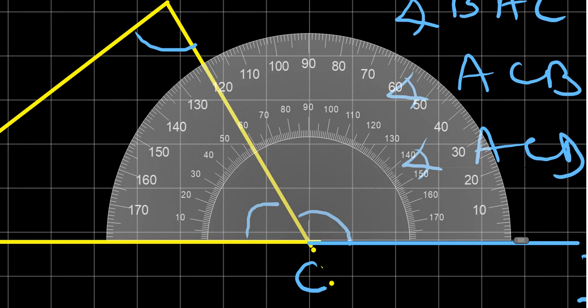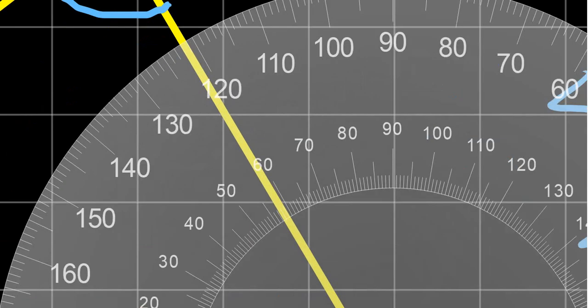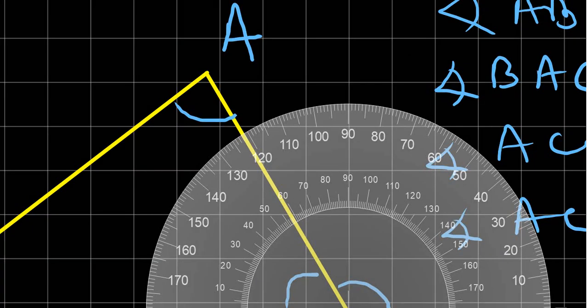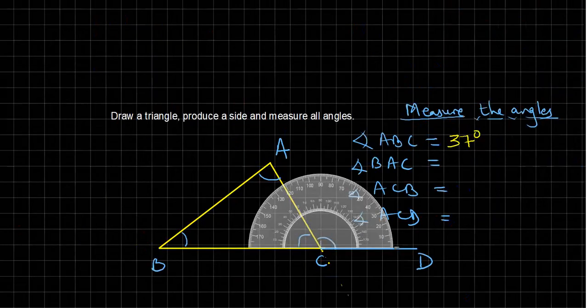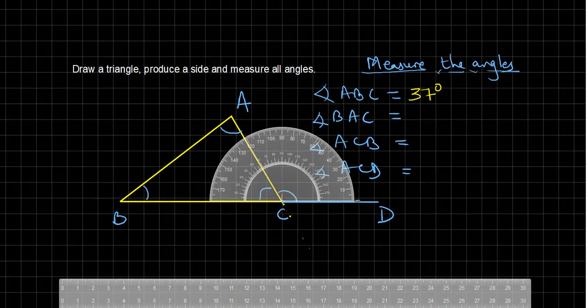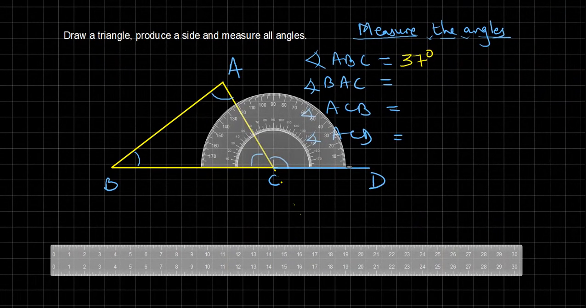This is not exactly 60 — it is 58 degrees, but the line is thick, so some error we have to manage. It could be 59 degrees. So let me write: ACB is 59 degrees.